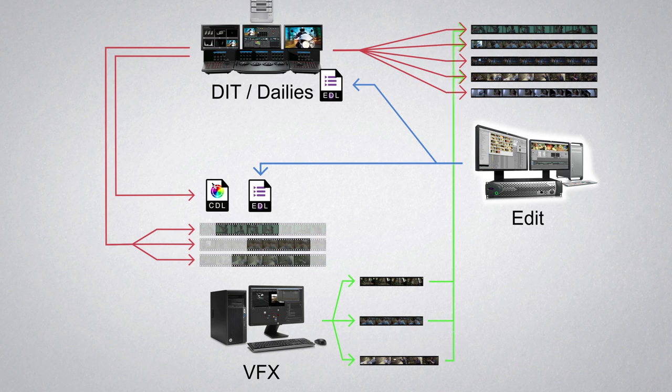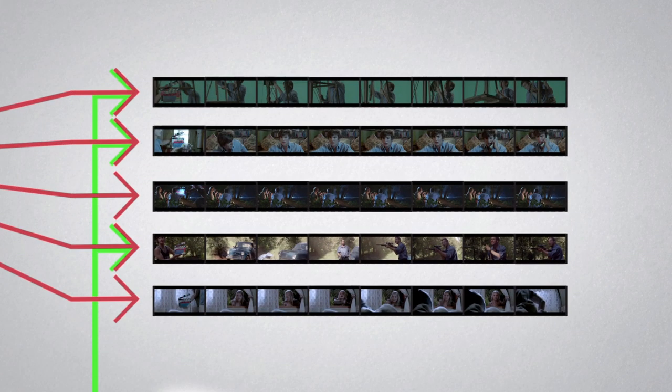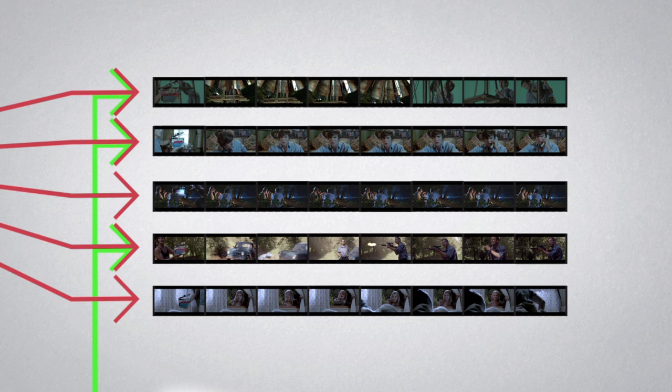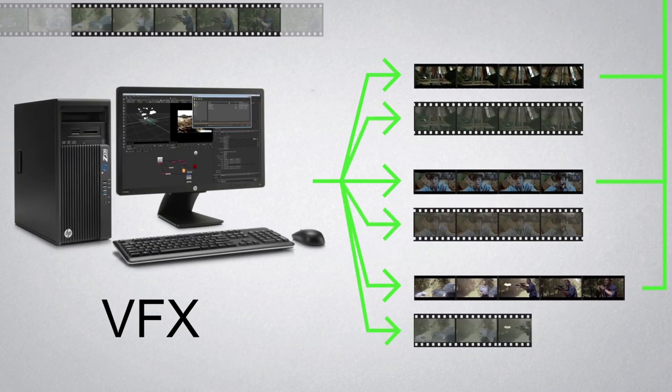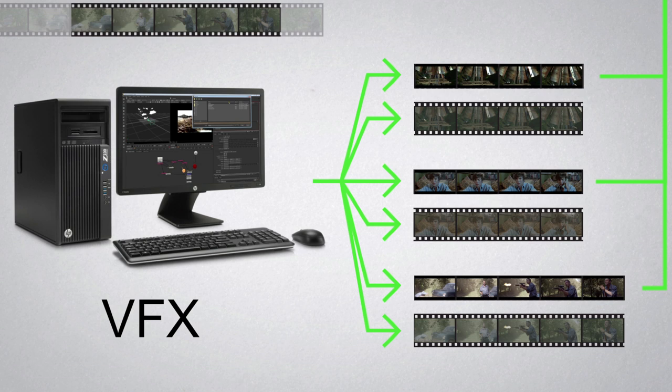This shot then replaces the shot in the editing timeline, allowing the director and the editor to watch the edit without noticing a difference between footage that originated from the DIT or footage rendered out by the VFX department. Besides these proxy files, the VFX department must also render another version of the shot in full high quality ungraded form — one that looks exactly the way it looked when the VFX department received it from the DIT.